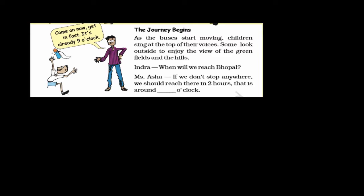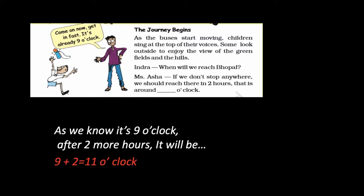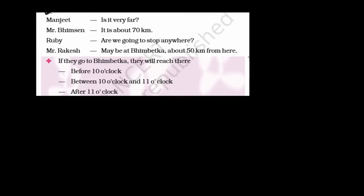Miss Asha says, 'If we don't stop anywhere, we should reach there in two hours.' So let's calculate: it's already 9 o'clock, and after two hours means we add two to nine. So 9 plus 2 equals 11 o'clock. They will reach their destination at 11 o'clock.